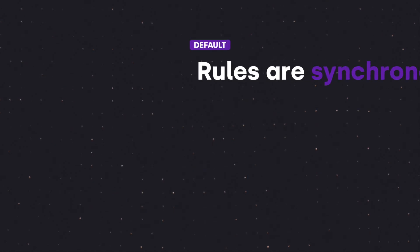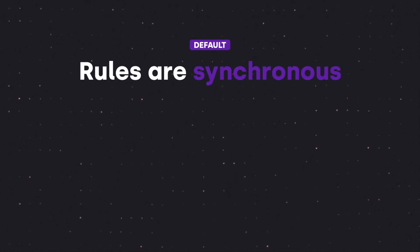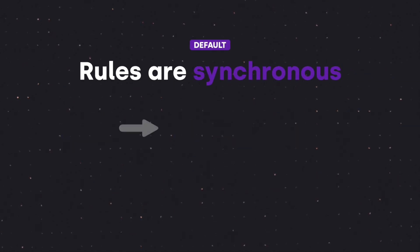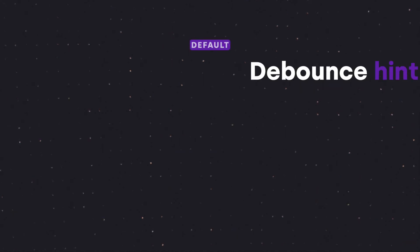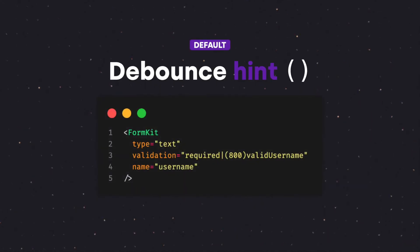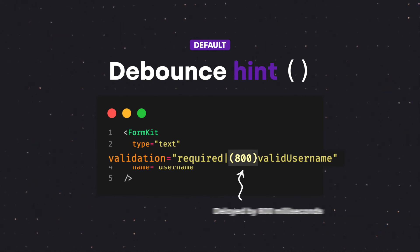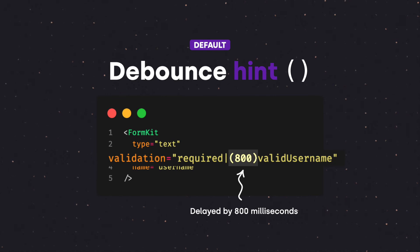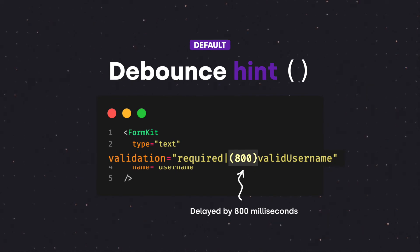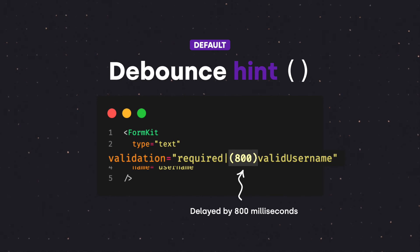Thirdly, by default, validation rules are synchronous — they run right away and are not debounced or delayed. We use the debounce hint marked by parentheses to delay a validation rule from running by the given number of milliseconds. This is useful if you are performing an expensive backend validation process and don't want API calls occurring on every keystroke.